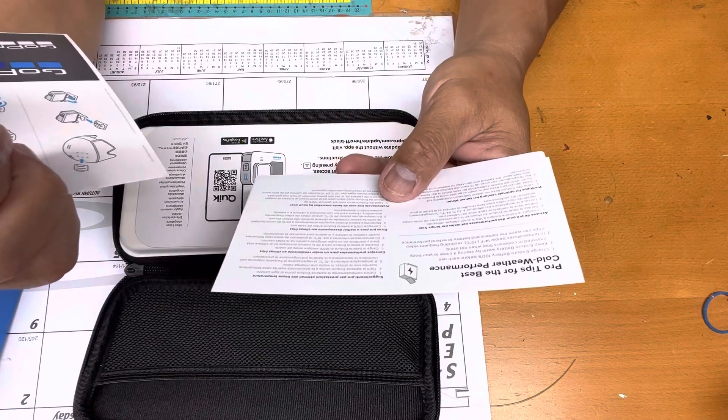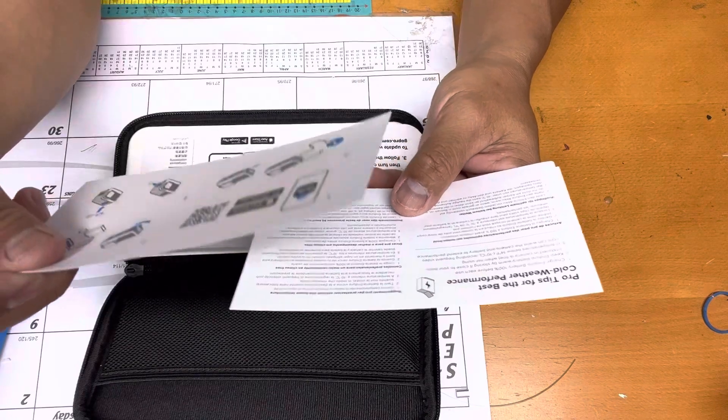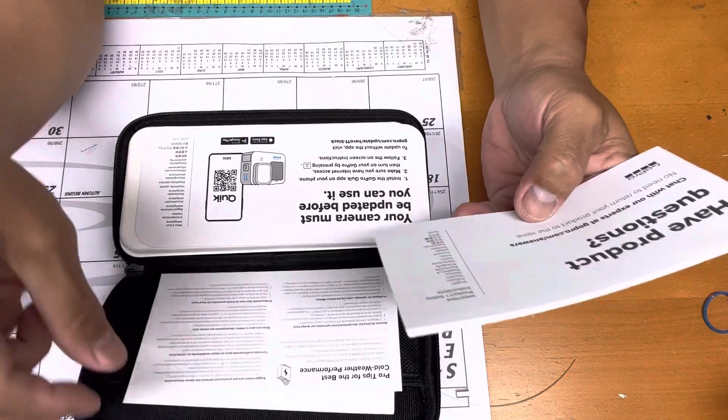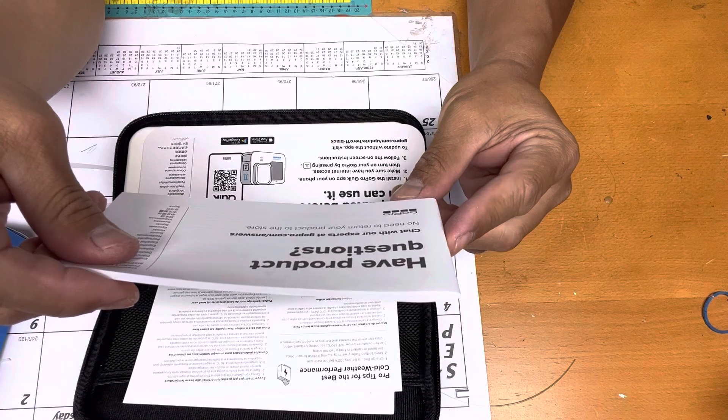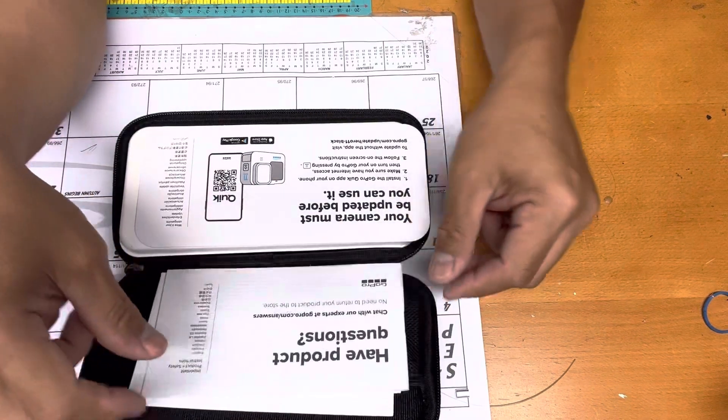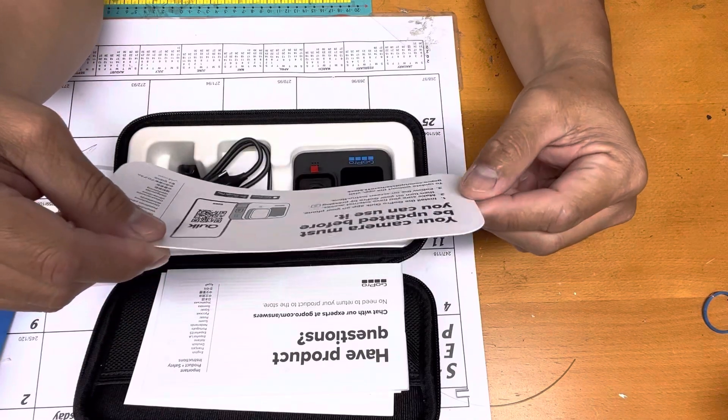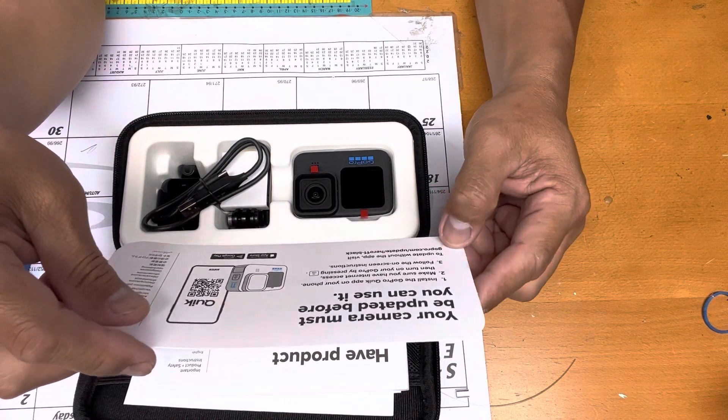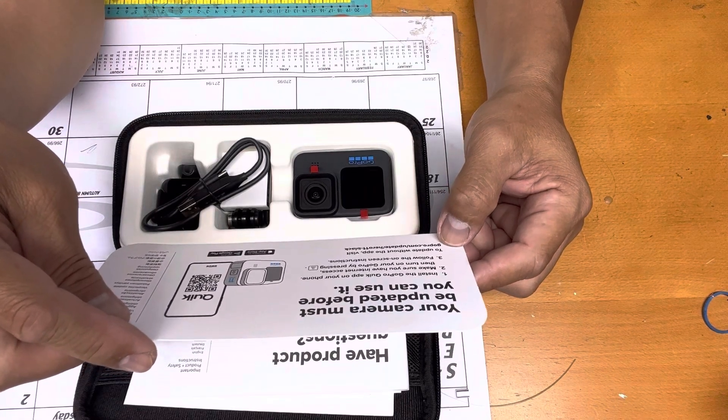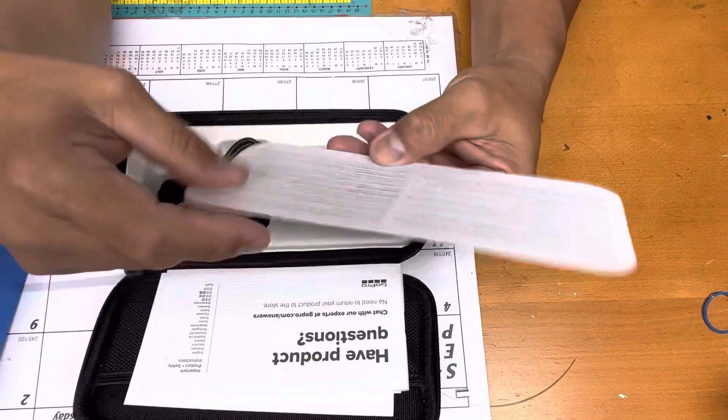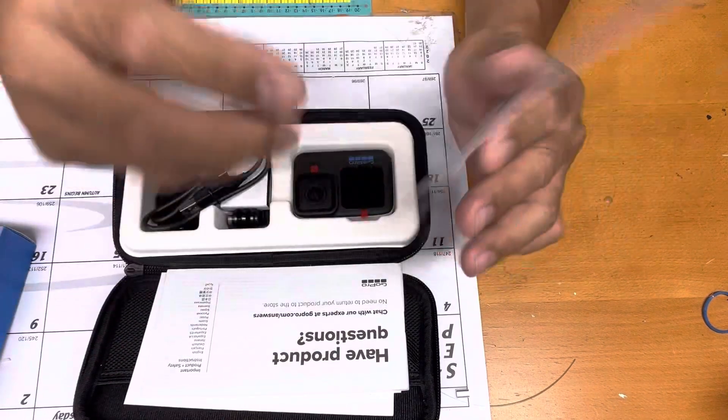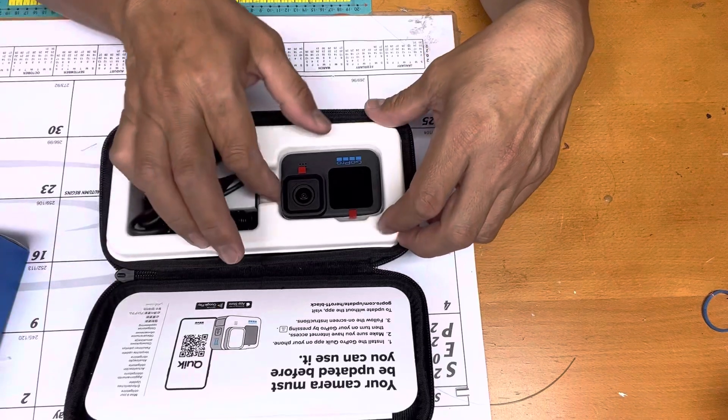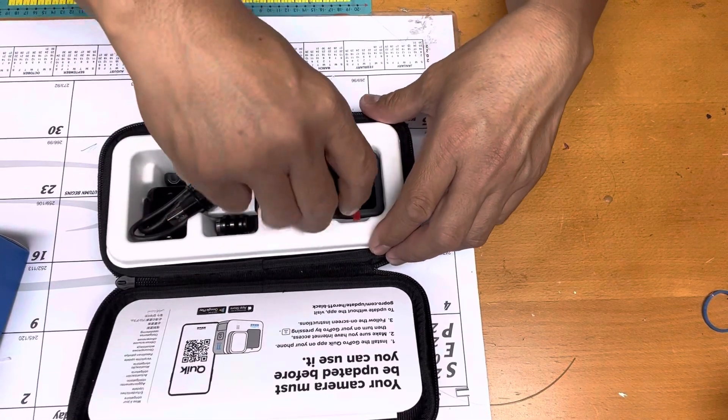All I want to know is if I can put this in. GoPro.com, maybe I need, I don't know if I have a free cloud. Install a GoPro Quik app on your phone and make sure the internet access, turn on your GoPro. To update without the app, GoPro update Hero Black. I need to update that one. Maybe they can give me a free cloud. Look at that, this is our GoPro 11.